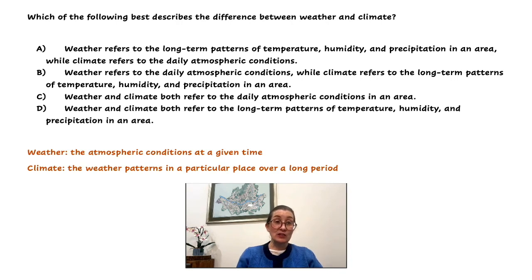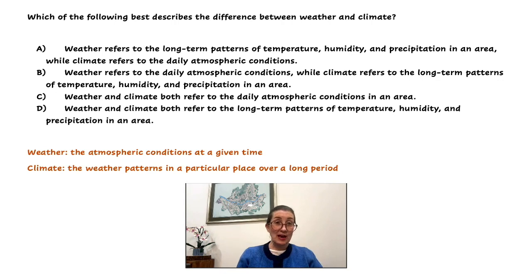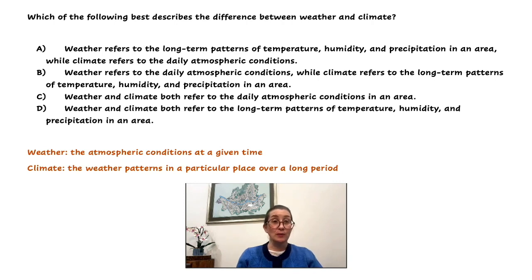Let's look at the definitions of each. Weather is the atmospheric conditions at a given time. Climate, on the other hand, is the weather patterns in a particular place over a long period of time. So given that, we have B: weather refers to the daily atmospheric conditions, while climate refers to the long-term patterns of temperature, humidity, and precipitation in an area.